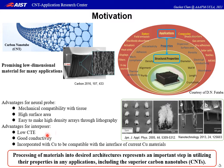In terms of interposers, the low CTE and good conductivity makes carbon nanotubes the perfect candidate for via fill material. Plus, incorporated with copper, the composite is compatible with the interface of current copper materials. However, some studies using carbon nanotubes as wires show their properties are still not yet satisfactory. Therefore, how to process the material into the desired architecture represents an important step in utilizing their properties and applications.